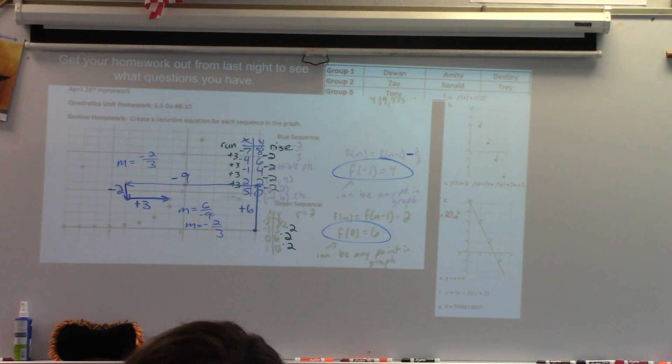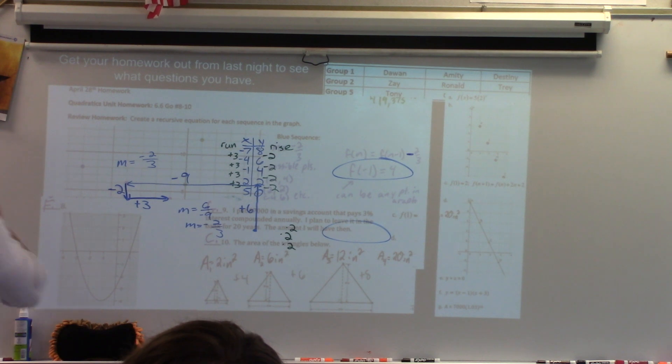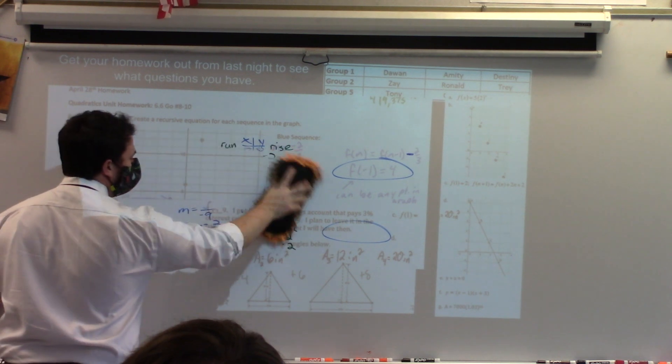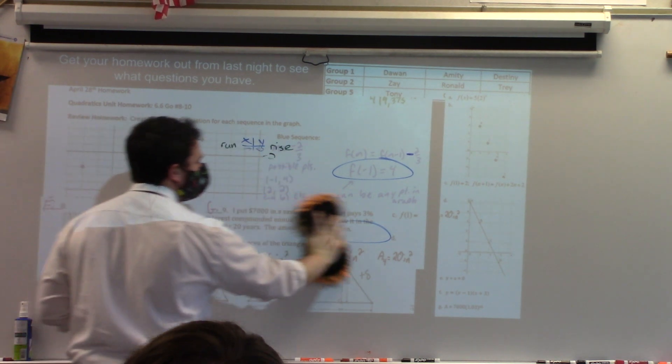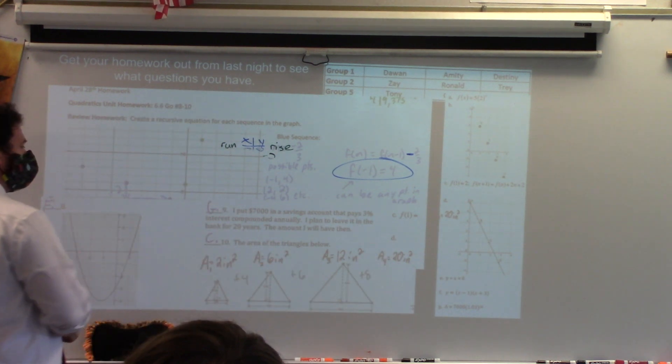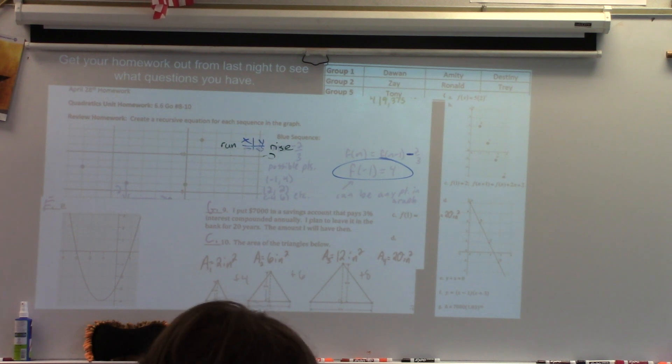Alright. Any more questions off the review? One, twice. Alright. Eight, nine, ten was F, G, and C. Any questions about eight, nine, ten?